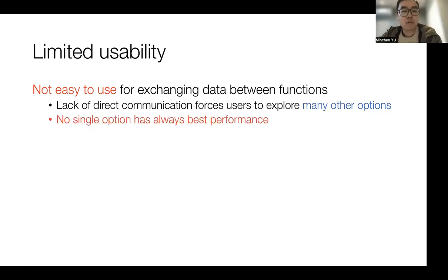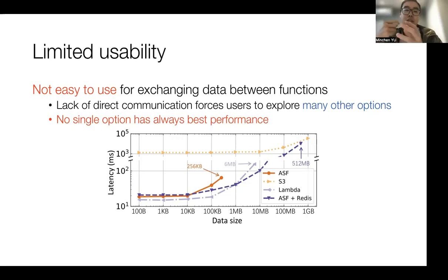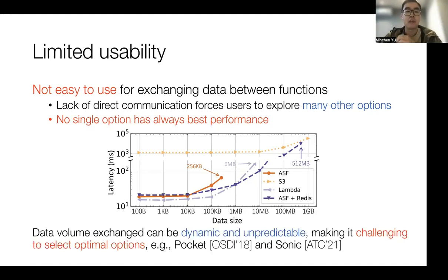However, there is no single option that can always have the best performance. To illustrate this, we conducted experiments on AWS Lambda, measuring the latency of transferring data between two Lambda instances. We include four options: Step Functions as a common orchestration service, S3 triggers, Lambda nested function calls, and Redis for fast data sharing. As you can see from the figure, no single option always achieves the best performance for all data sizes. Given that data volumes exchanged in real-world applications can be dynamic and even unpredictable, it is very challenging for users to select the optimal data exchange option.